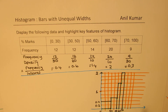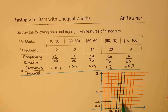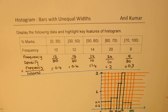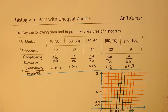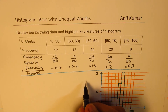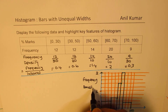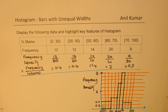The last group is from 70 to 100 and density is 0.3, which sits between 0.2 and 0.4 — so we go in between on the graph. That takes us to 100 on the x-axis. The x-axis label is percentage marks and the y-axis is frequency density. That is how we draw the histogram to represent the given information.